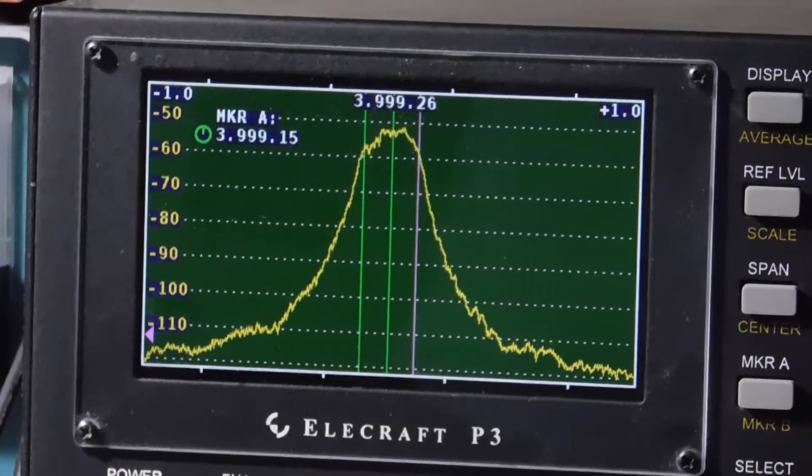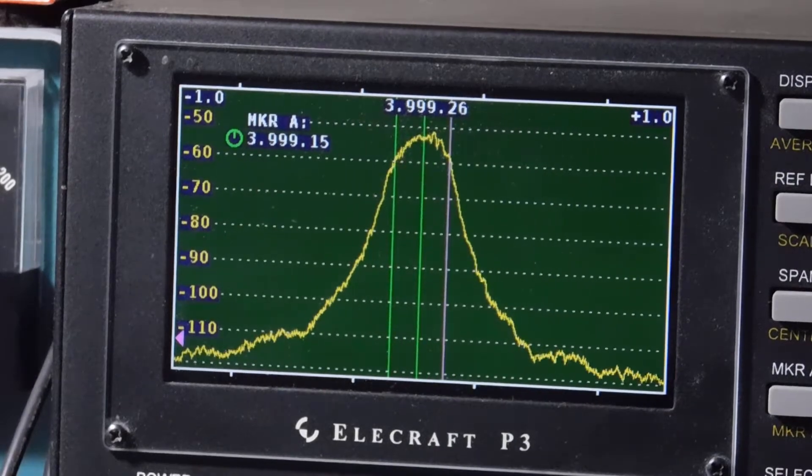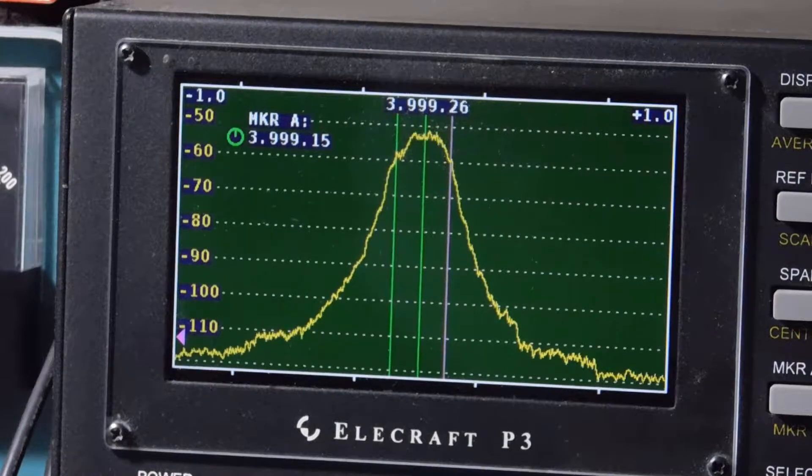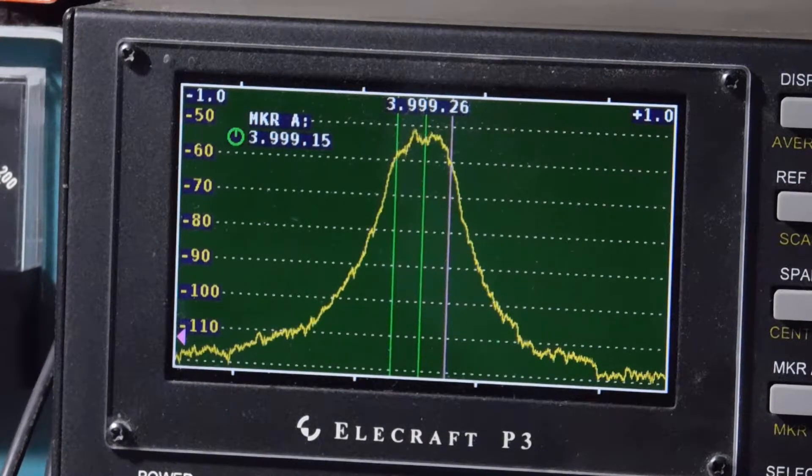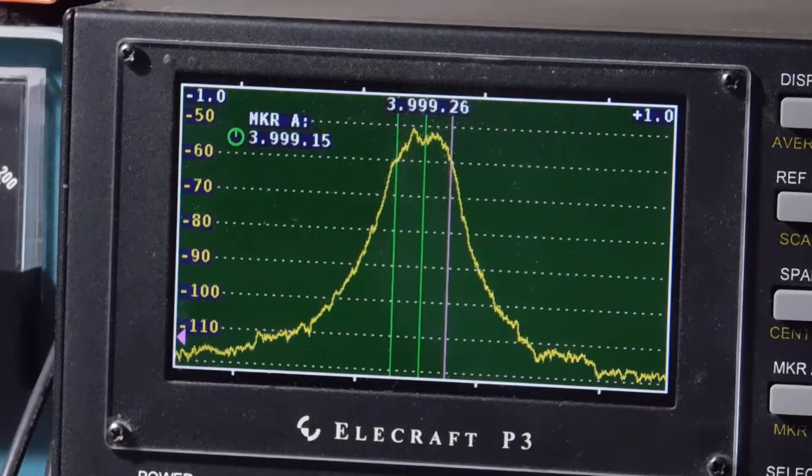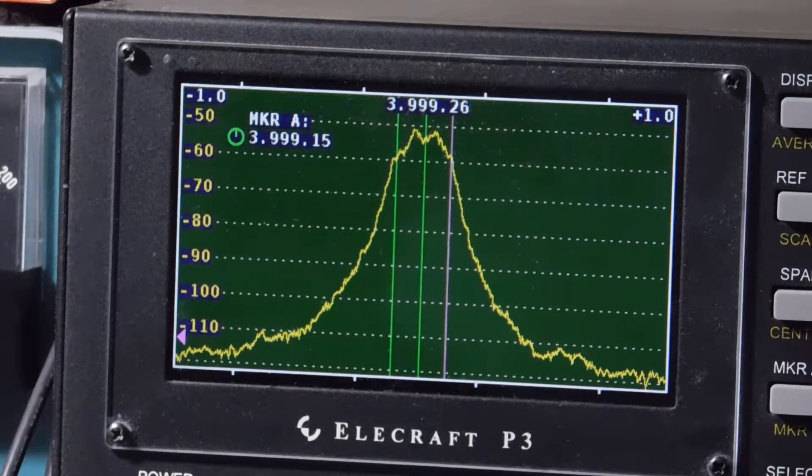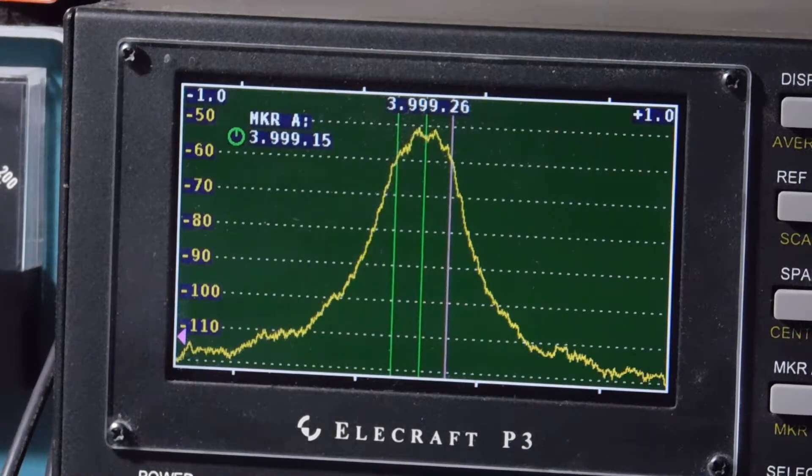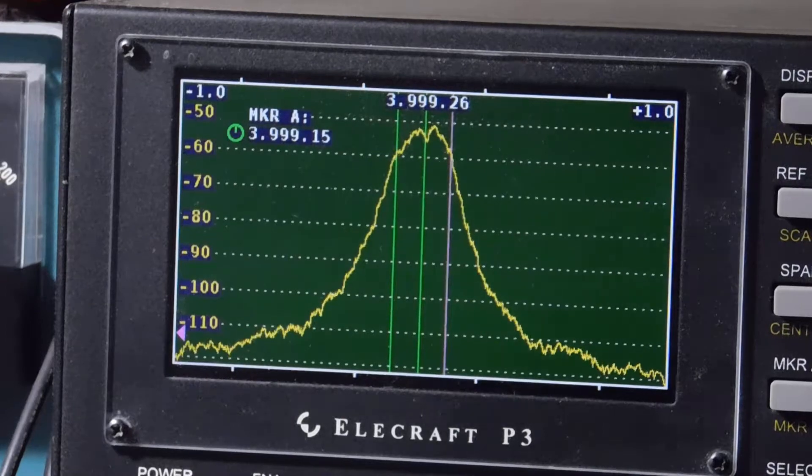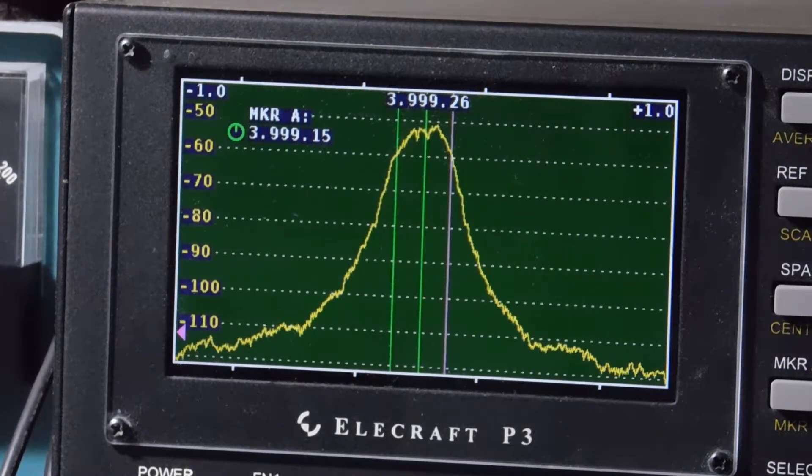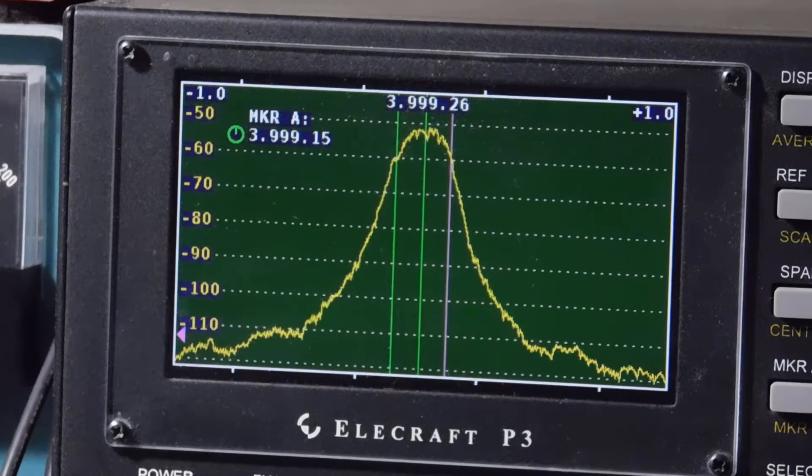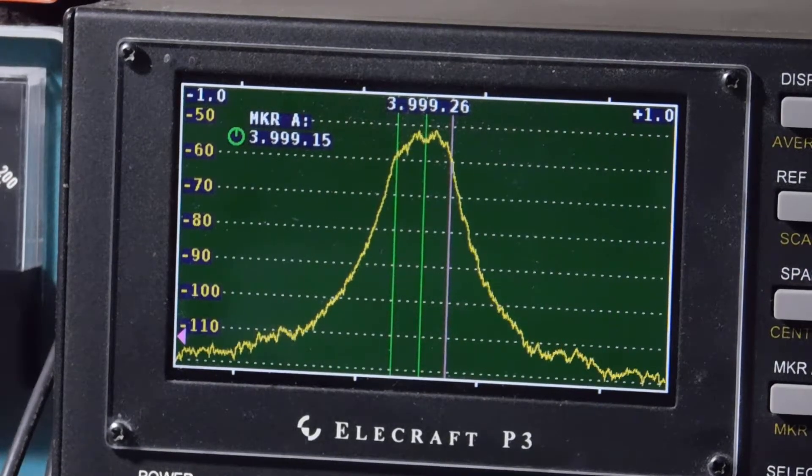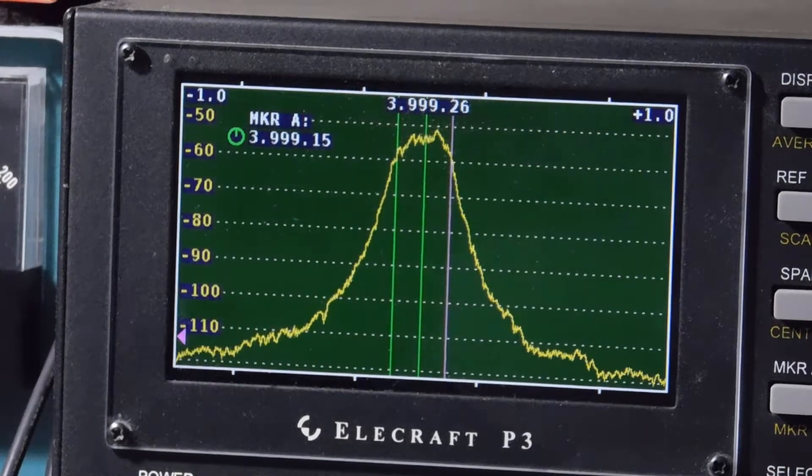And there she is. So this has, probably can't see it close enough, but it's got just a little bit more insertion loss, which is to be expected because it's got another crystal. But the shape factor is much better. The bandwidth at the 6 dB points, I've already figured out, is 220 Hz, compared to 250 Hz for the 3-pole. And let me pause it and do the 60 dB reading.